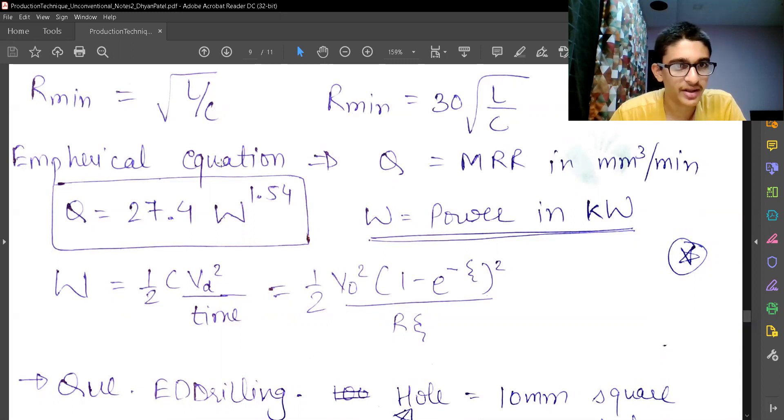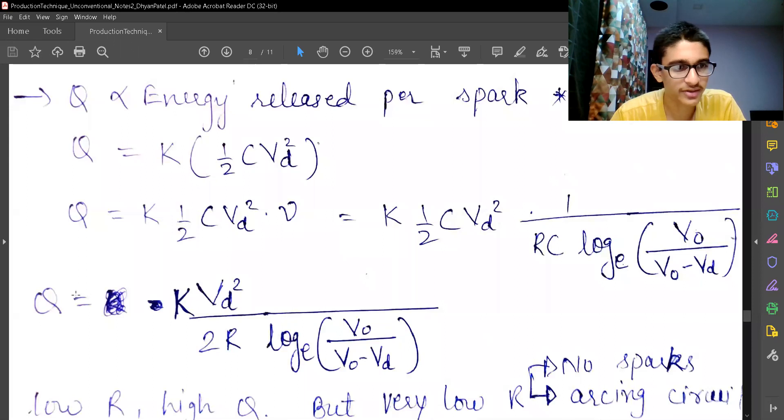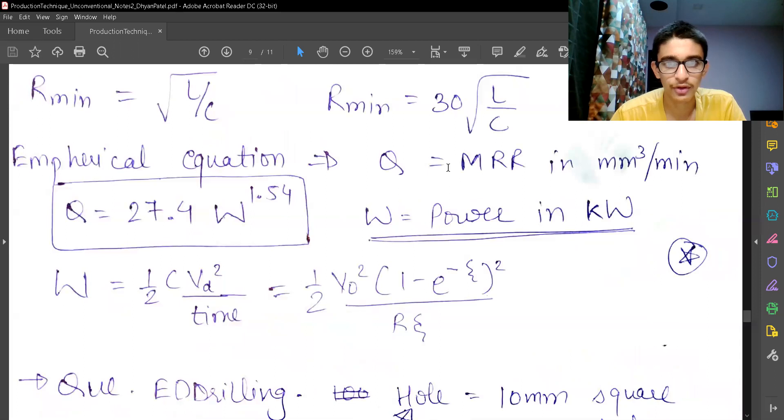So my empirical equation for Q, the material removal rate, which has the units of mm cube per minute, is given by Q equals 27.4 into work power to the power 1.754. The power must be inputted in kilowatt units, not watt units, otherwise it will give wrong answer.